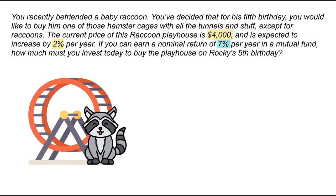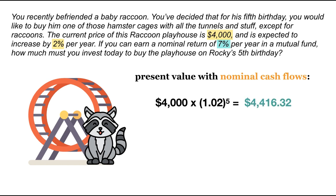Let's try it together. First, we'll solve for our present value using nominal cash flows. We need to figure out how much the Playhouse is going to cost in five years. Prices are rising at 2% each year. Thus, in five years, the Playhouse will cost $4,000 times 1.02 to the power of 5, or $4,416.32.